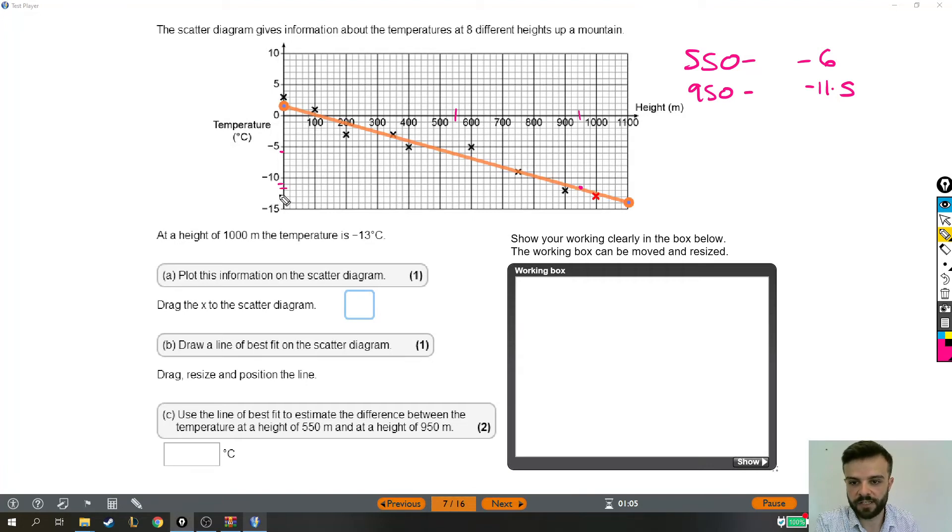Now, as always, the stuff I'm writing is only for your benefit. The examiner doesn't see that. So we need to write things in our working box that we do want the examiner to see. So I am going to say that at 550 it was minus 6, and at 950 it was minus 11.5.